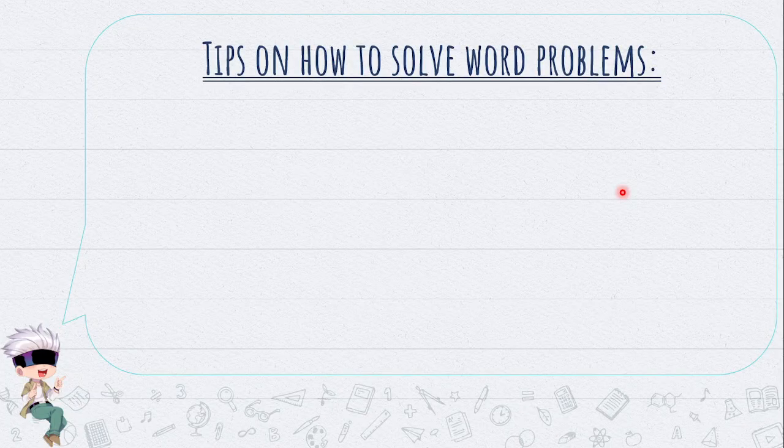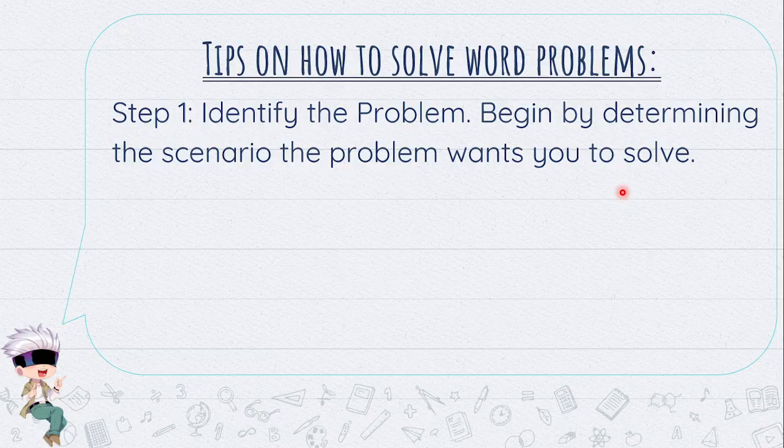Tips on how to solve word problems. Step 1: Identify the problem. Begin by determining the scenario the problem wants you to solve. For Lesson 4, Step 1 pertains to identifying if the given problem involves a geometric sequence or an arithmetic sequence.